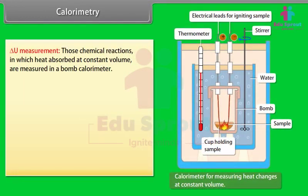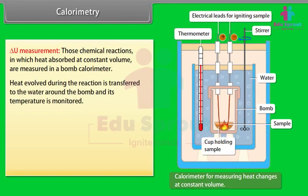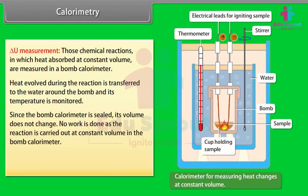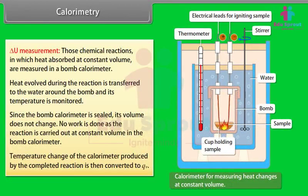ΔU measurement. Chemical reactions in which heat is absorbed at constant volume are measured in a bomb calorimeter. The steel vessel is immersed in a water bath to ensure no heat is lost to the surroundings. A combustible substance is burned in pure dioxygen supplied in the steel bomb. Heat evolved during the reaction is transferred to the water around the bomb and its temperature is monitored. Since the bomb calorimeter is sealed, its volume does not change and no work is done. Temperature change of the calorimeter is then converted to QV.